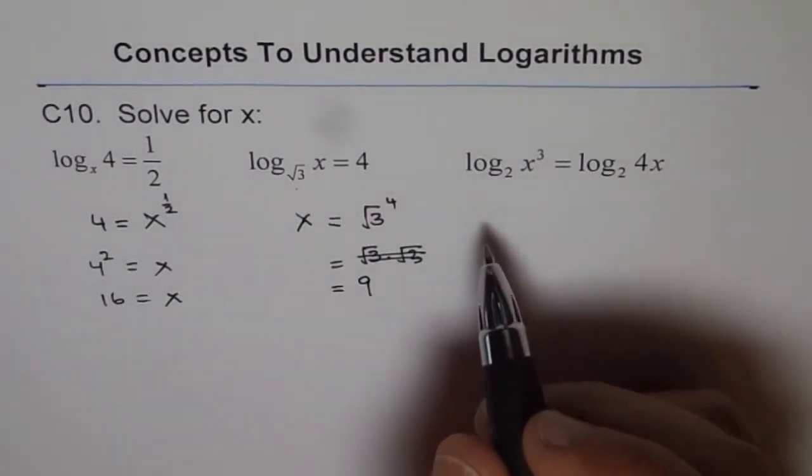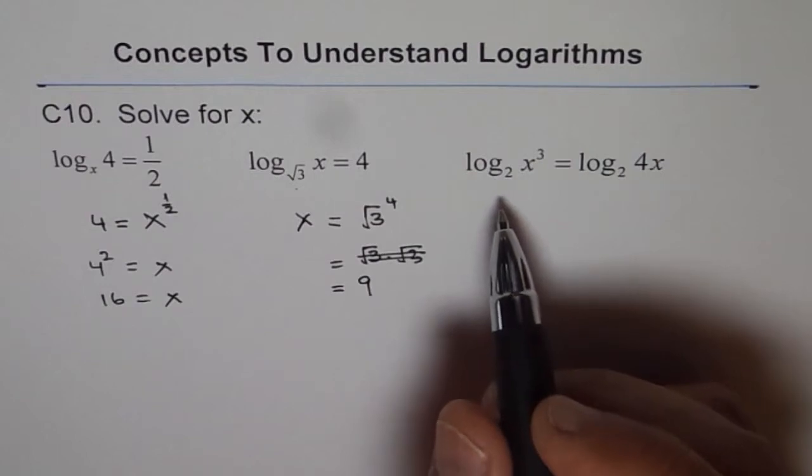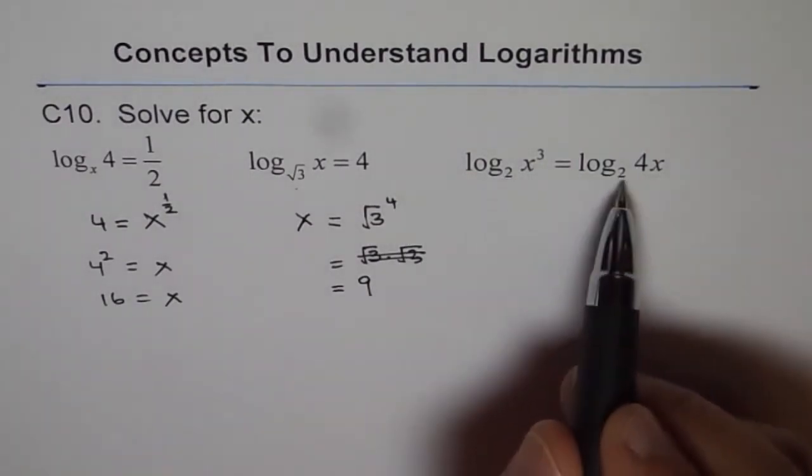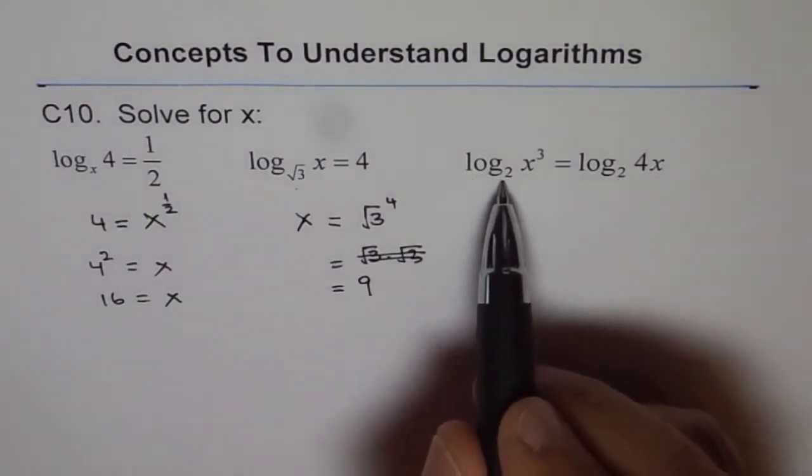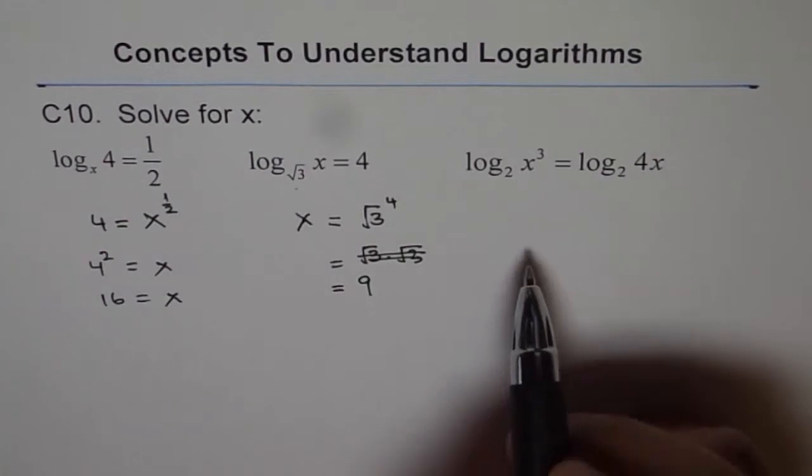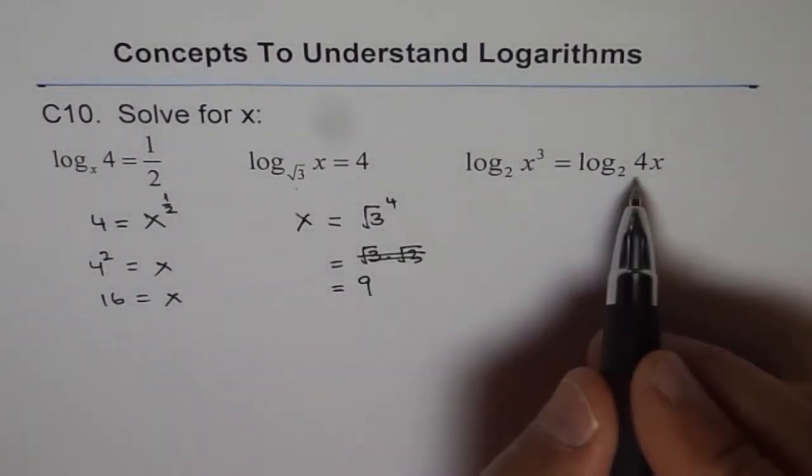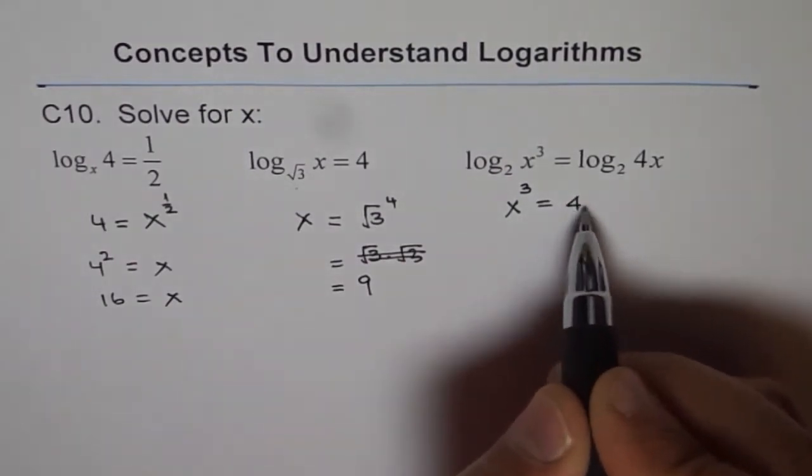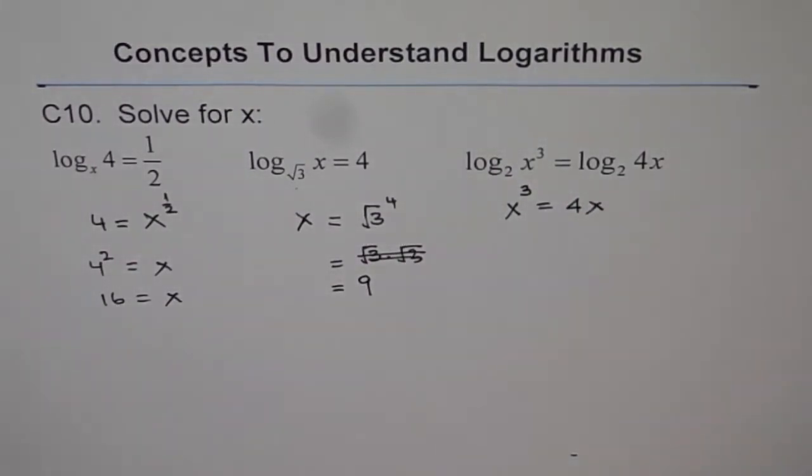Here, we have an equation with the same basis. Log to the base 2 of x cubed, and log to the base 2 of 4x. We can write that this is possible if x cubed equals to 4x. We get our equation without log.